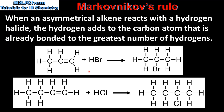So in our first reaction, when hydrogen bromide reacts with propene, the major product is 2-bromopropane. According to Markovnikov's rule, the hydrogen atom of the hydrogen bromide bonds to carbon number 1, which is already bonded to the greatest number of hydrogens. In our second reaction, when but-1-ene reacts with hydrogen chloride, the major product is 2-chlorobutane. According to Markovnikov's rule, the hydrogen atom of the hydrogen chloride bonds to carbon number 1, which is already bonded to the greatest number of hydrogens.